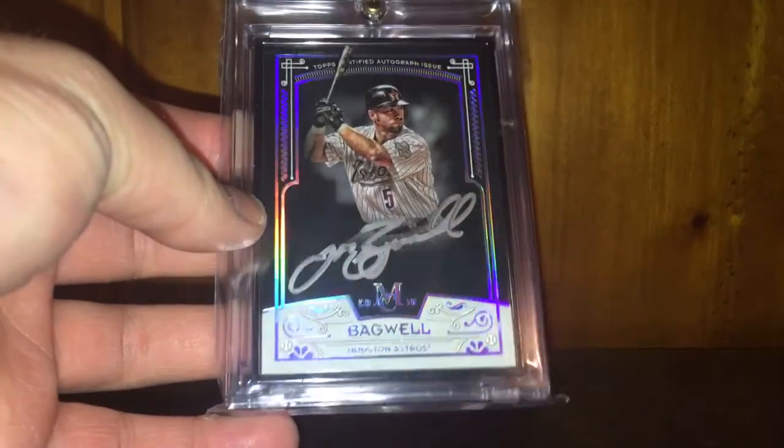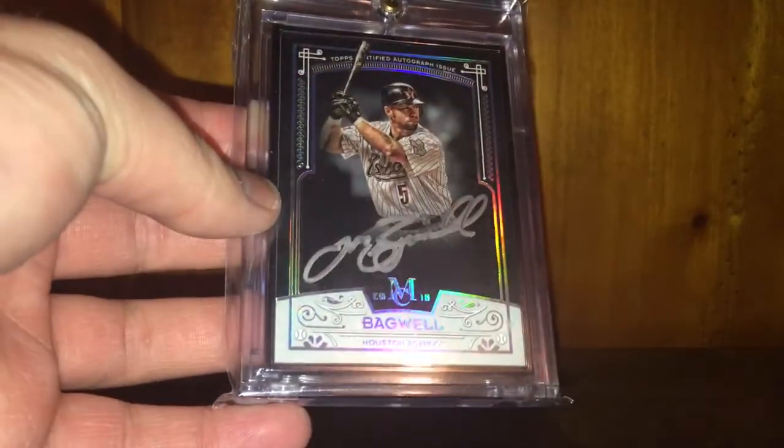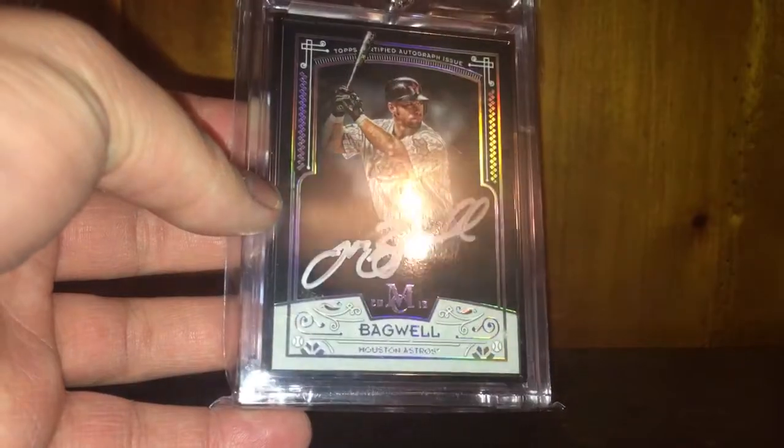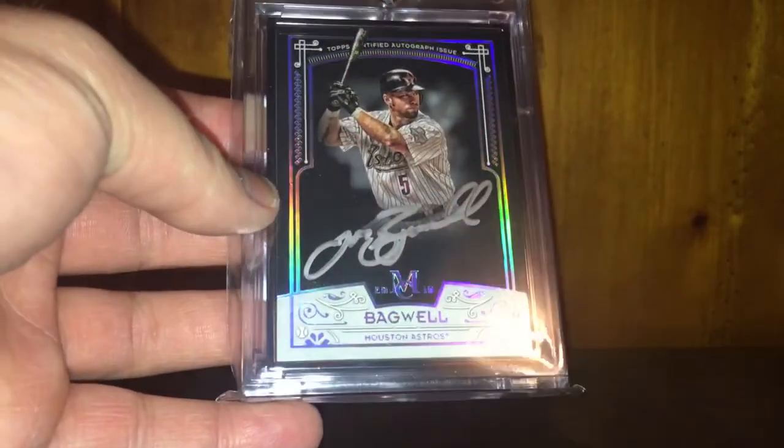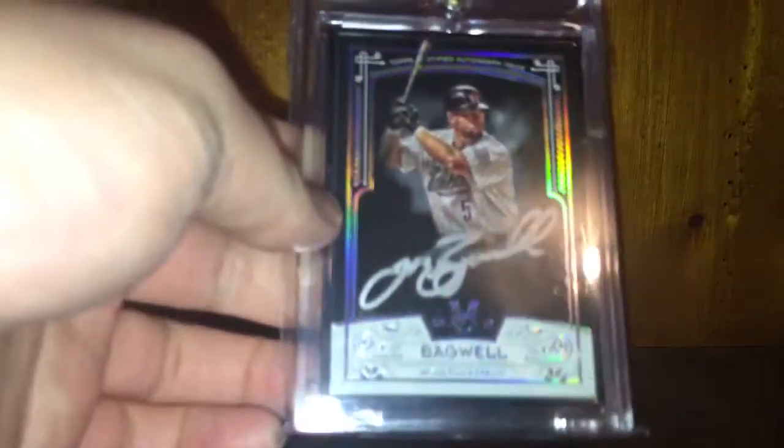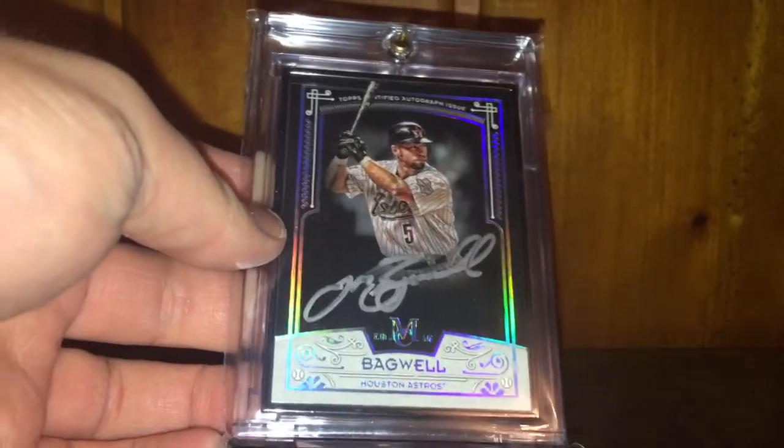And lastly, this is probably my favorite card in my little baseball collection. This guy was also one of my favorites growing up. And you know, I love these cards, so I had to pick one up, especially of him. This is Jeff Bagwell out of Topps Museum, silver ink, and this is the black frame parallel. You can see the rainbow foliage on it, numbered out of five. Probably at the moment right now, this is my favorite card in the baseball collection.